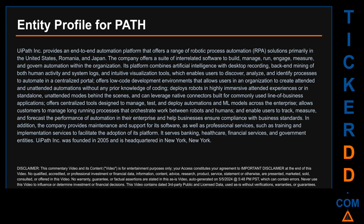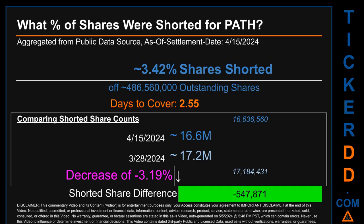What percentage of shares were shorted for PATH for the two-week period ending on settlement date April 15, 2024? About 16.6 million shares of PATH were shorted out of a total of approximately 486.6 million outstanding shares. Therefore, based on as-is discovered public data when this video was generated, the ticker has a short interest of roughly 3.42%, calculated by taking the number of shorted shares and dividing it by the number of outstanding shares.